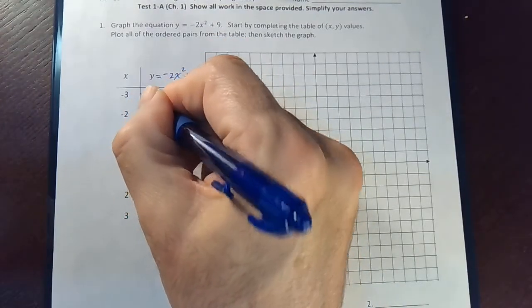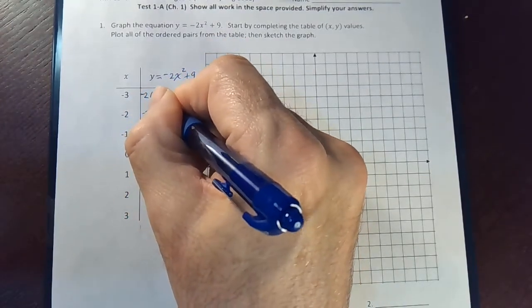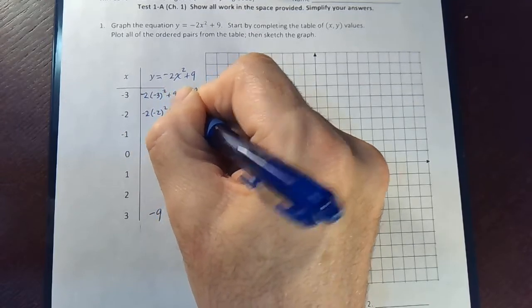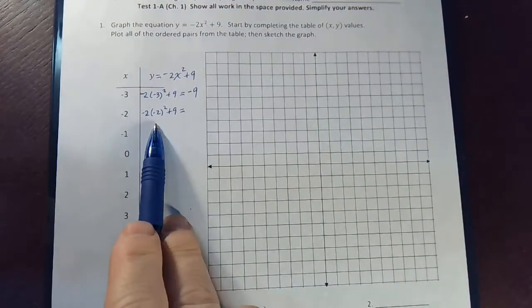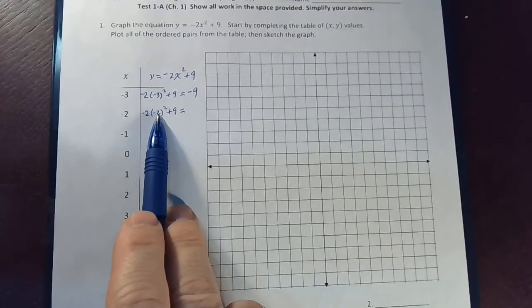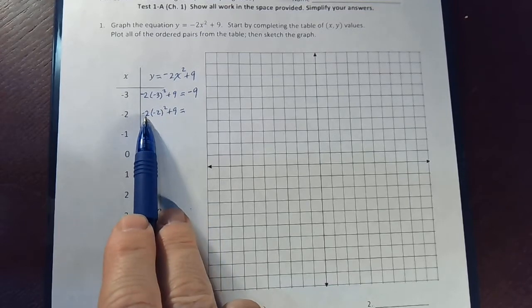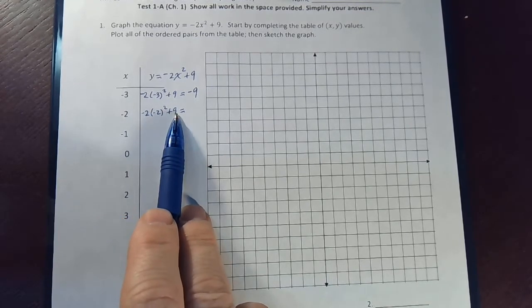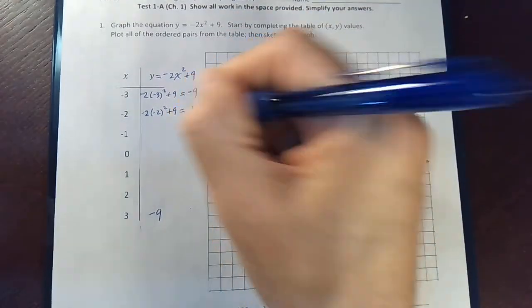Similarly, when I plug in negative 2, I'm going to get negative 2 times negative 2 squared plus 9. Well, negative 2 squared is 4. 4 times negative 2 is negative 8. Negative 8 plus 9 is 1.